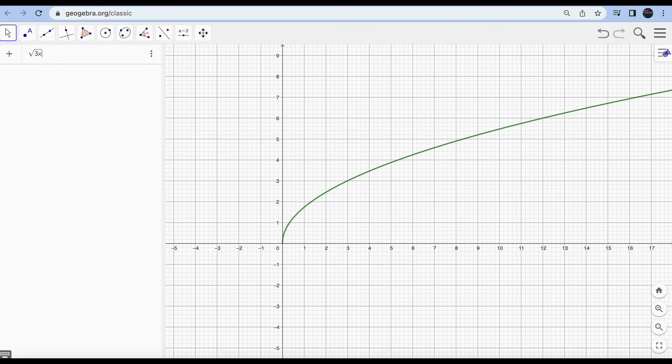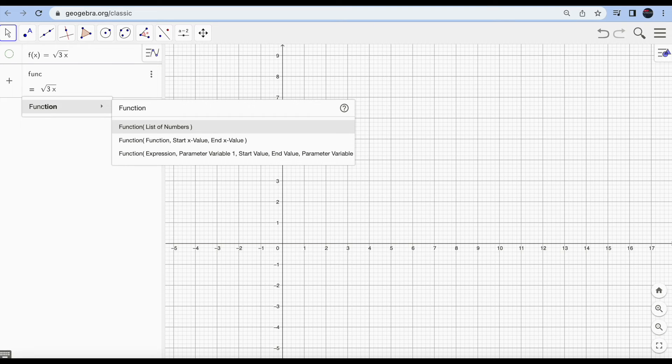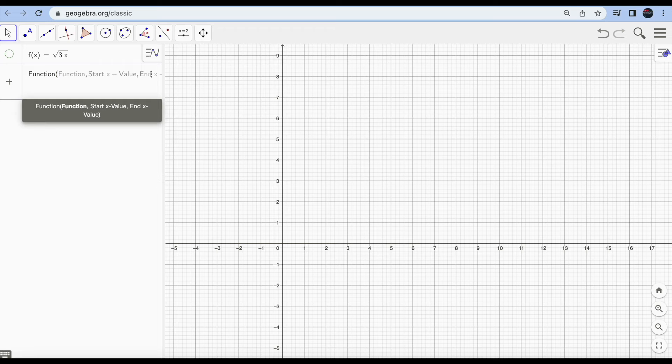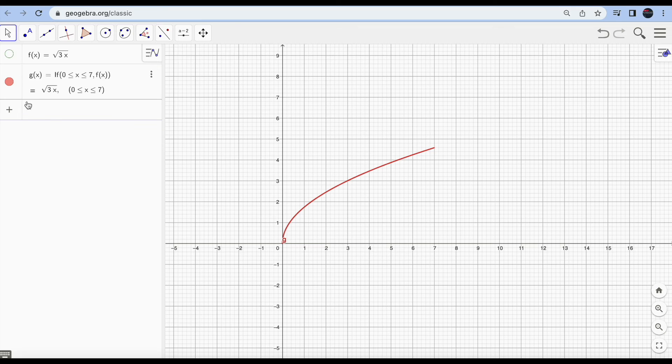I'm just going to create a function, for example, square root of x. That's a good thing I want to tell you. Hide this function and use the function command. When you see function, second option, because I want to restrict my function f from 0 to 7. Look, now my function is from 0 to 7.